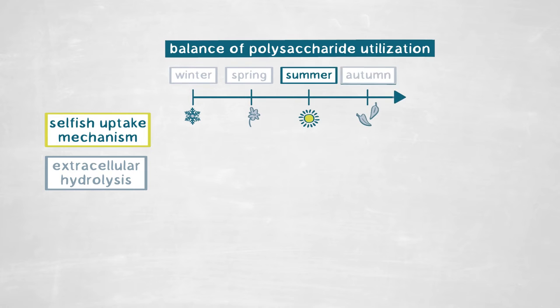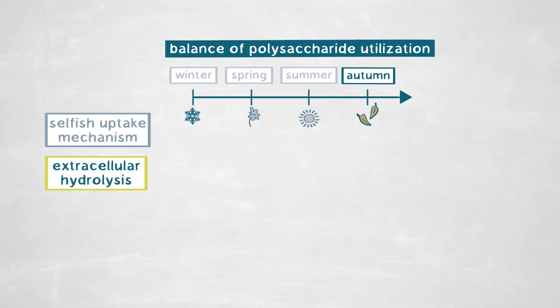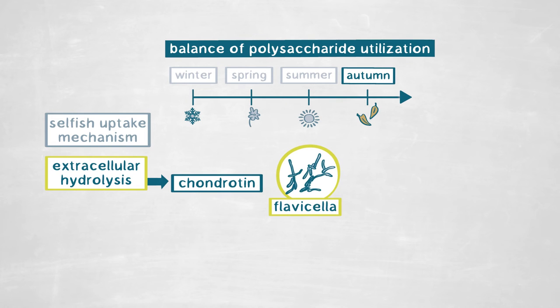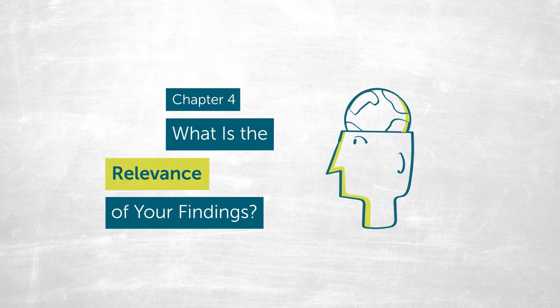Going from mainly selfish uptake in summer to autumn, we could mainly see extracellular hydrolysis of xylan and chondroitin. Based on bulk community analysis, solely in the chondroitin incubation there was an increase in abundance of the Bacteroidetes genus Flavicella. We speculate that since Flavicella was highest in abundance at the same time as the highest chondroitin extracellular hydrolysis rate, these are the main bacterial group hydrolyzing this complex substrate. We were really surprised that within just a few hours in summer, about 60% of the whole bacterial community was capable of taking up laminarin through the selfish mechanism.